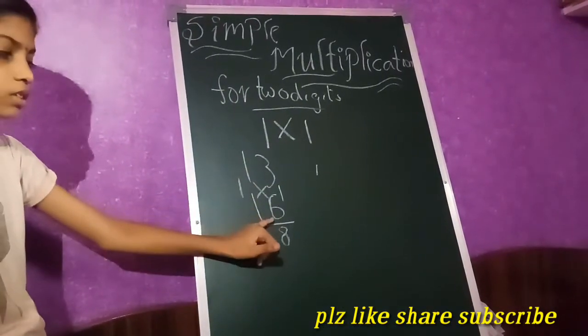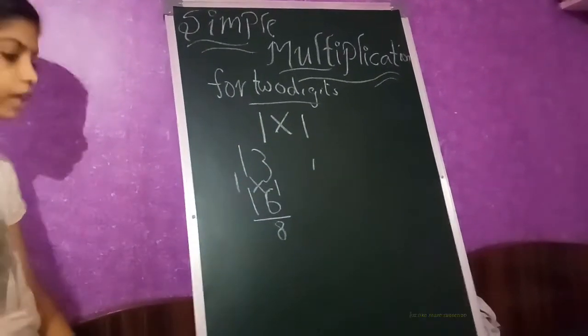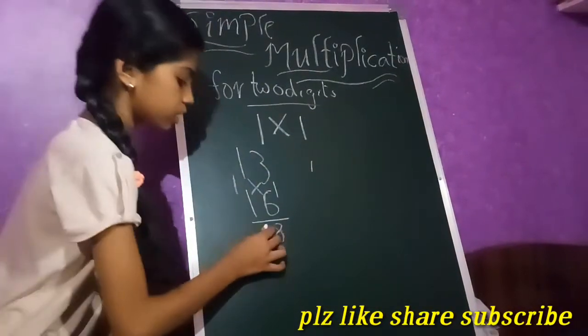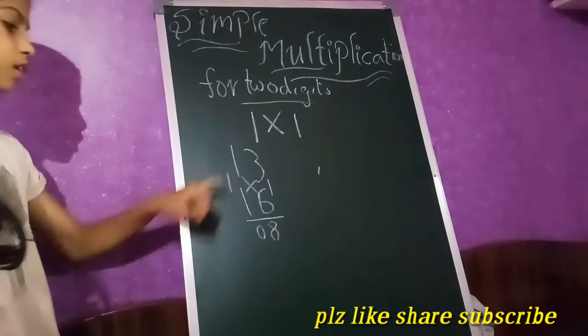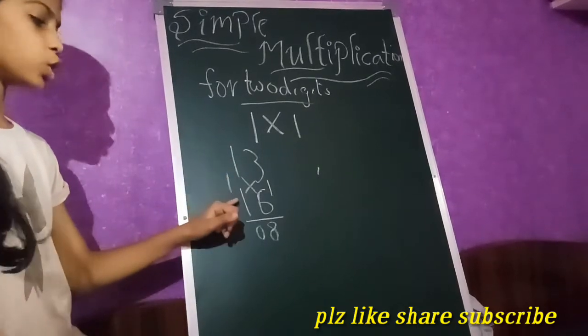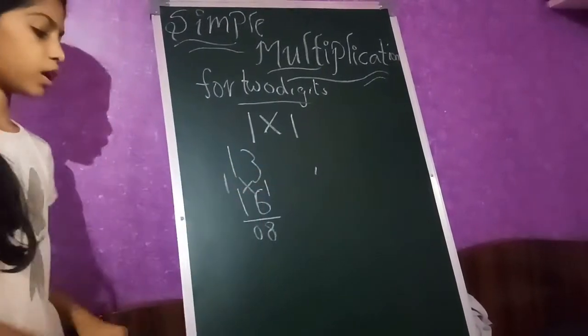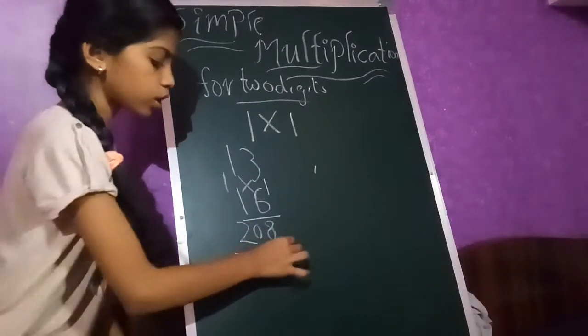6 are 6, 6 plus 3, 9, 9 plus 1, 10. Keep 1 beside. 1 plus 1, 1, 1 into 1, 1 plus 1, 2. 2 0 8.